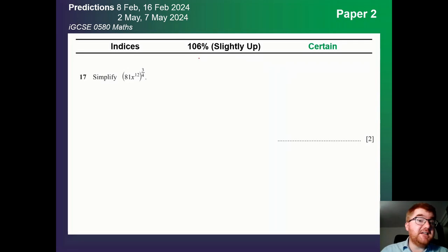Indices slightly up at 106%. So straight into the certain category. And I've got a nice little question here as well. Very typical when they have a number in front of the X as well. Make sure when you do these questions, you're doing the index to both the 81 and the three quarters. That is a very common mistake at IGCSE.